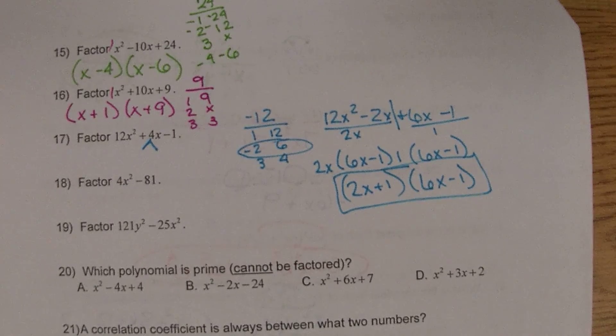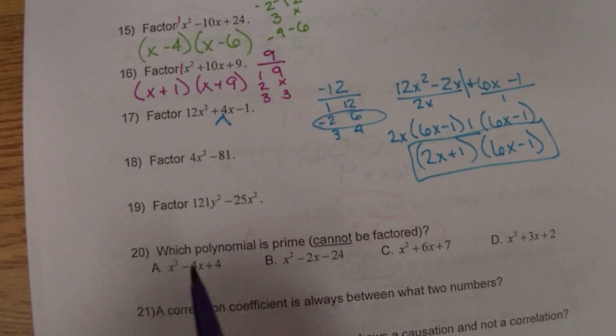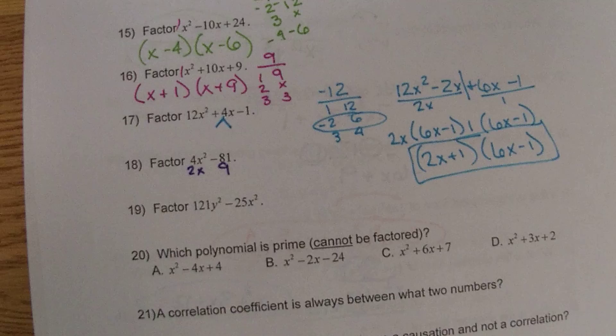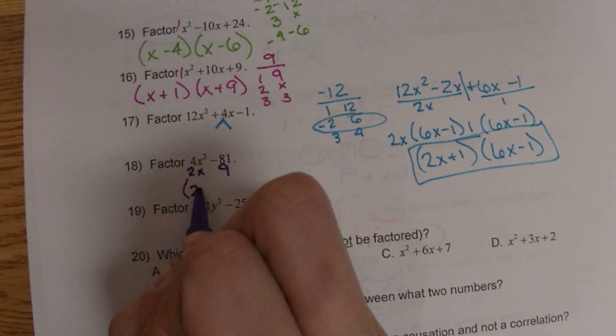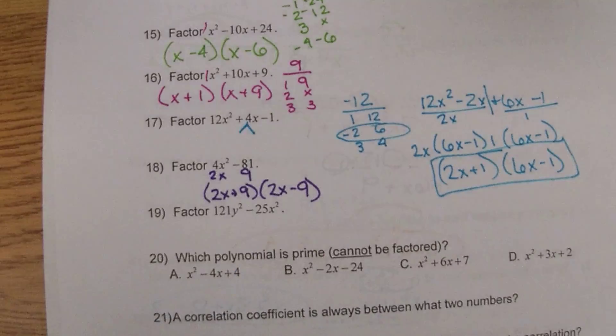18 is a special case. No GCF, but 9 times 9 is 81. 2 times 2 is 4 and half of the exponent is x to the first power. So we will get a 2x plus 9 and a 2x minus 9.